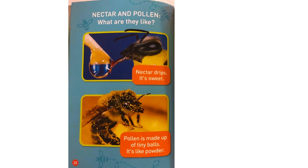Nectar and pollen — what are they like? Nectar drips; it's sweet. Pollen is made up of tiny balls; it's like powder.